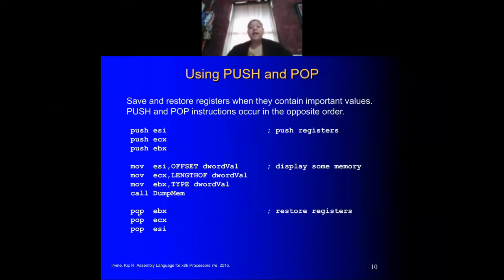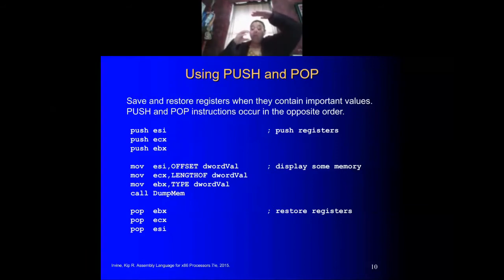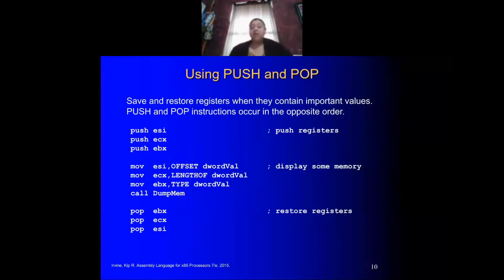Popping always happens in the opposite order from pushing. Since the last push was EBX, which is at the top of the stack, we pop EBX first, which increments the pointer. Then we pop ECX, incrementing the pointer again, and finally we pop ESI, clearing the stack and incrementing the pointer so we have more room again.